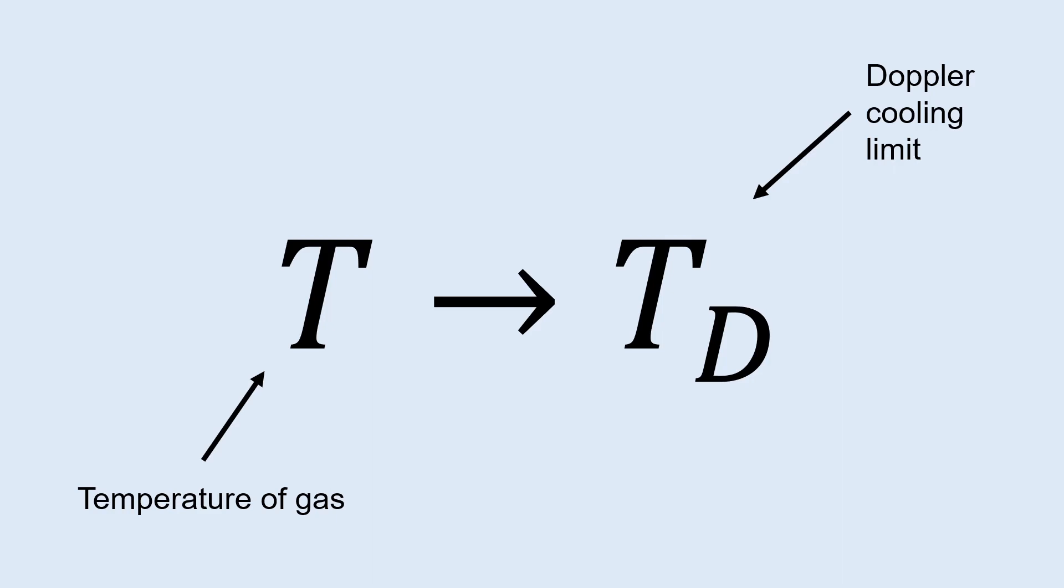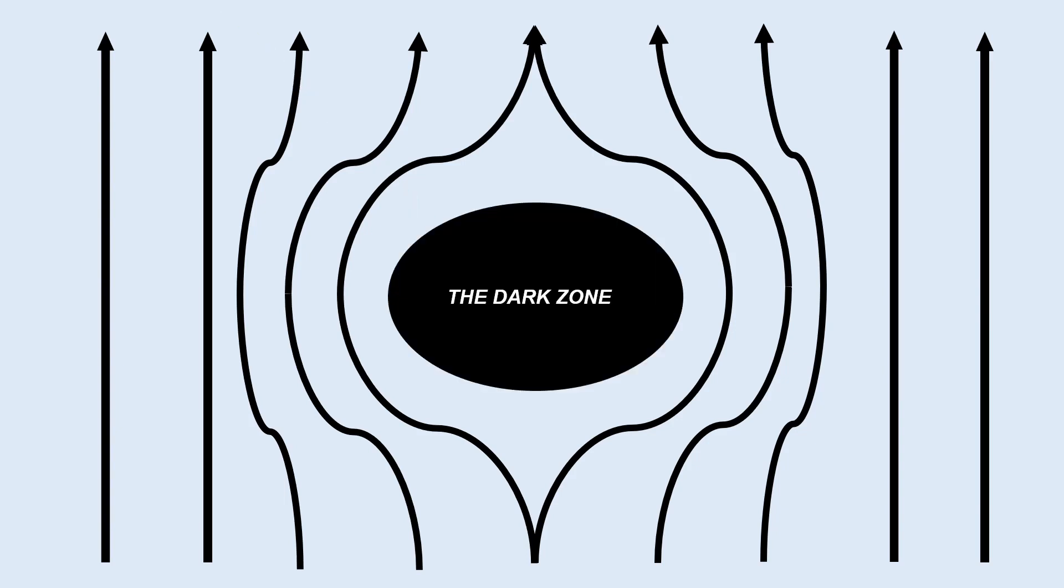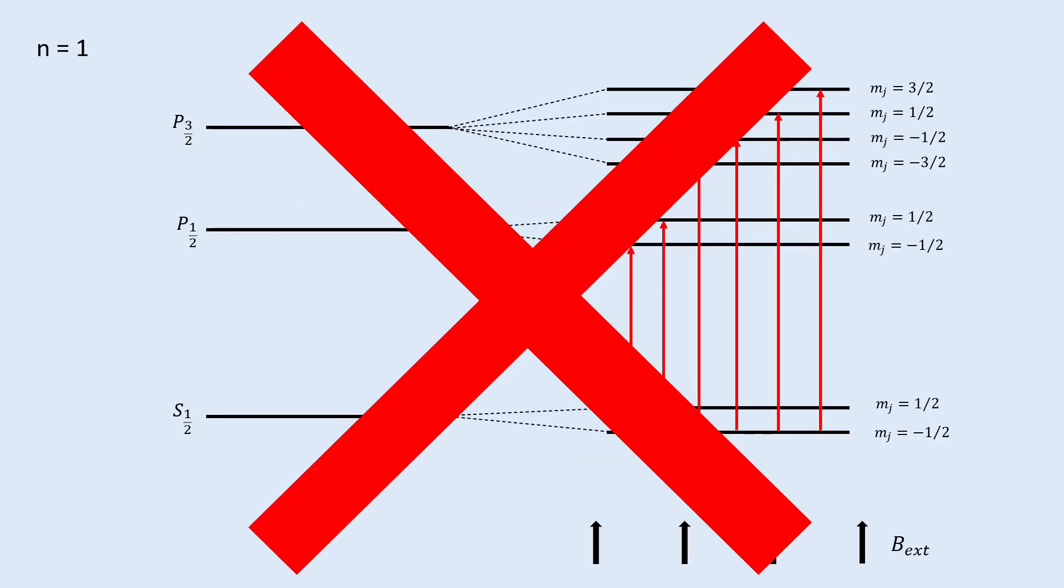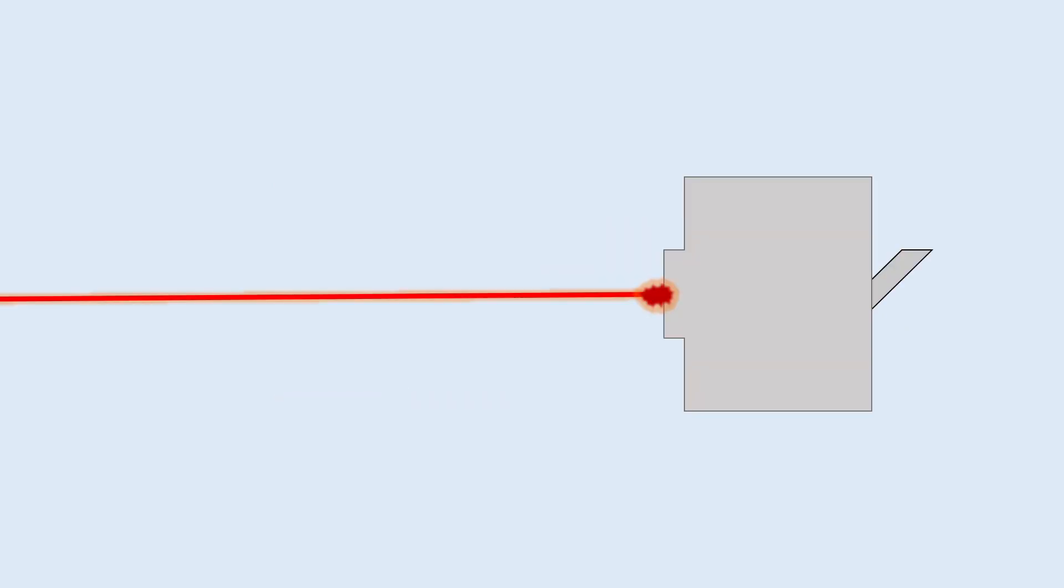The limitations of only using the optical magnetotrap become apparent as the temperature of the gas approaches the Doppler cooling limit. As a result of the restorative force process outlined earlier, the cold, slow atoms congregate in the central zero field region of the trap, often called the dark zone, as because there is no Zeeman shift occurring in this area, very little absorption and emission of photons occurs, so there is none of the pretty fluorescence. At this point, laser cooling reaches its effective limit.